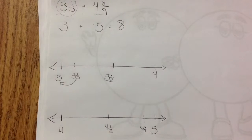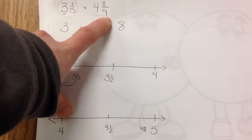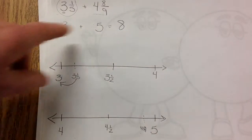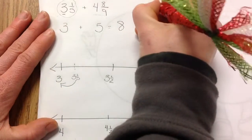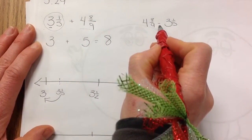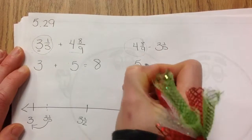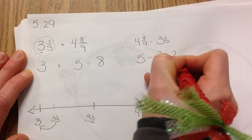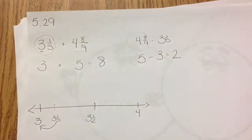See how easy that is? Now, what we could actually do is figure it out and verify, but that would require changing denominators — and that's why we're estimating. Now let's imagine we wanted to find the difference between four and eight-ninths and three and one-fifth. We found that four and eight-ninths is closer to five, and three and one-fifth is closer to three. So the difference is two. That's our estimate — it's close.